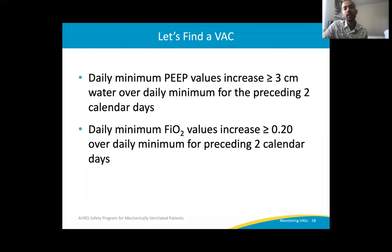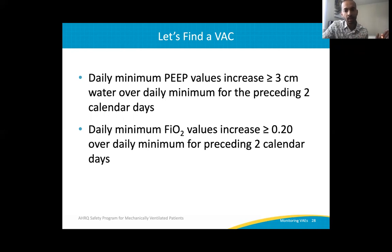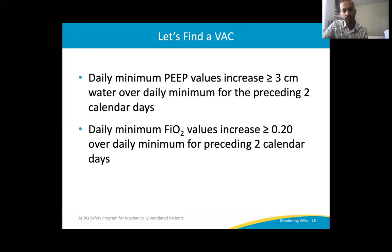There is an excellent resource from the Agency for Healthcare Research and Quality and NHSN — I highly recommend reviewing that document. Let's cover the basics of how to identify a VAE or VAC. VAC stands for ventilator-associated condition. The daily minimum PEEP value — the lowest PEEP — if it has increased by at least three centimeters of water pressure over the lowest value in the previous two calendar days, that is one possibility. Or if the daily lowest FiO2 has increased by at least 20% compared to the preceding two days, you have a VAC.